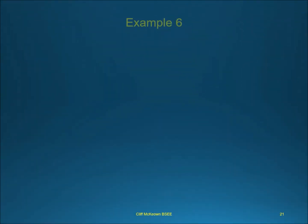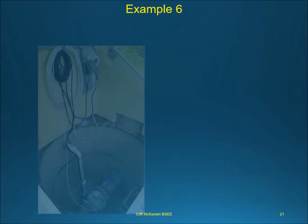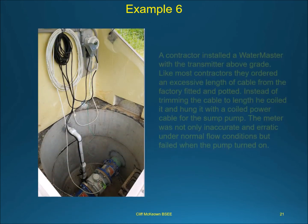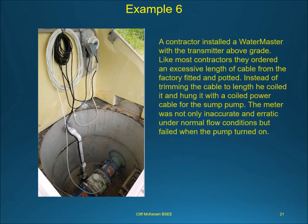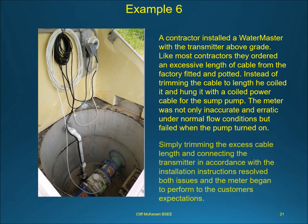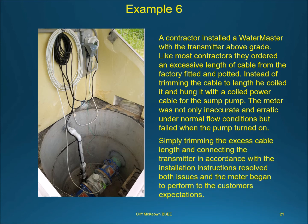A contractor installed a Water Master with the transmitter above grade. Like most contractors, they ordered an excessive length of cable from the factory, fitted and potted. Instead of trimming the cable to length, he coiled it and hung it with a coiled power cable for the sump pump. The meter was not only inaccurate and erratic under normal flow conditions but failed when the pump turned on. Simply trimming the excess cable length and connecting the transmitter in accordance with the installation instructions resolved both issues and the meter began to perform to the customer's expectations.